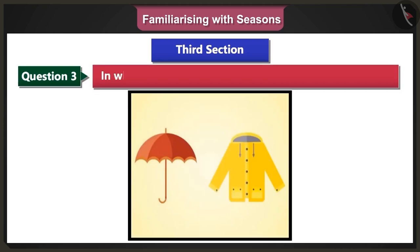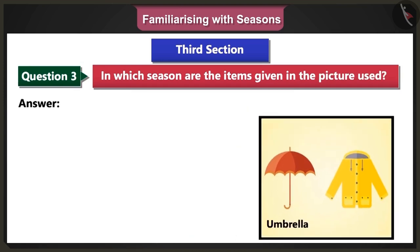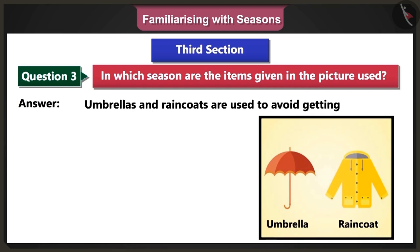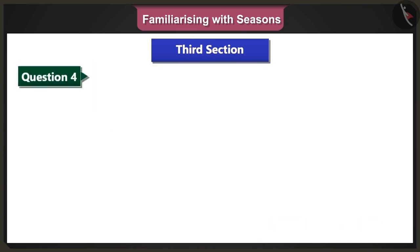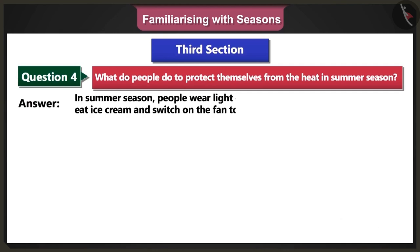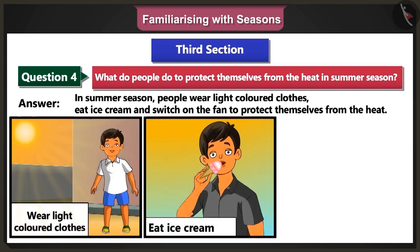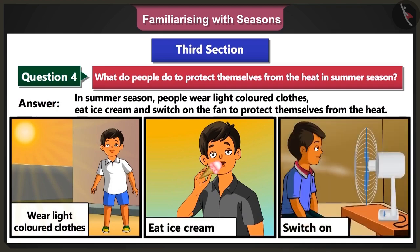Third question: In which season are the items given in the picture used? Answer: Umbrellas and raincoats are used to avoid getting wet during the monsoon season. Fourth question: What do people do to protect themselves from the heat in summer season? Answer: In summer season, people wear light-coloured clothes, eat ice cream and switch on the fan to protect themselves from the heat.